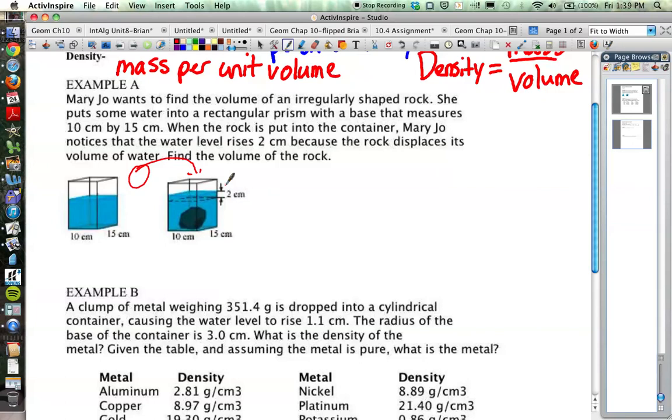What we're really interested in is this little slice, this slice of liquid that the rock is displacing. Not the whole container's volume, but just that volume being displaced. That volume has dimensions of 10 centimeters and 15 centimeters, but now its height is 2. So we have a little prism of water that's 10 by 15 by 2.